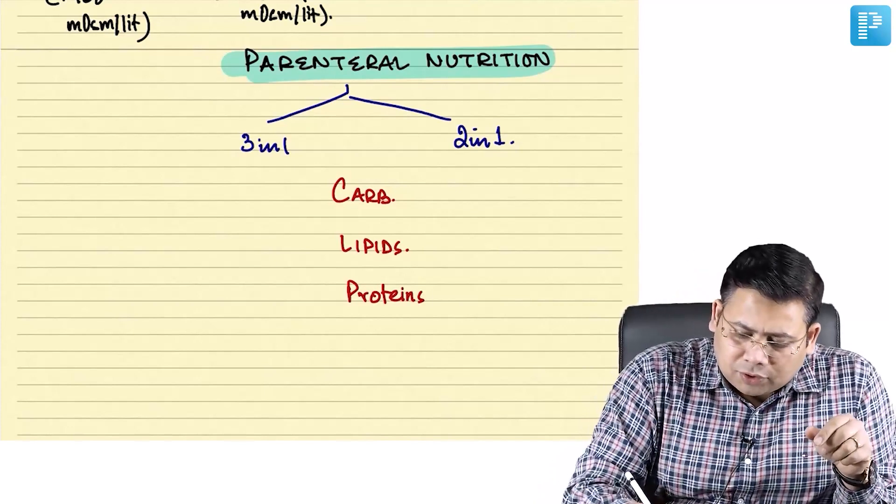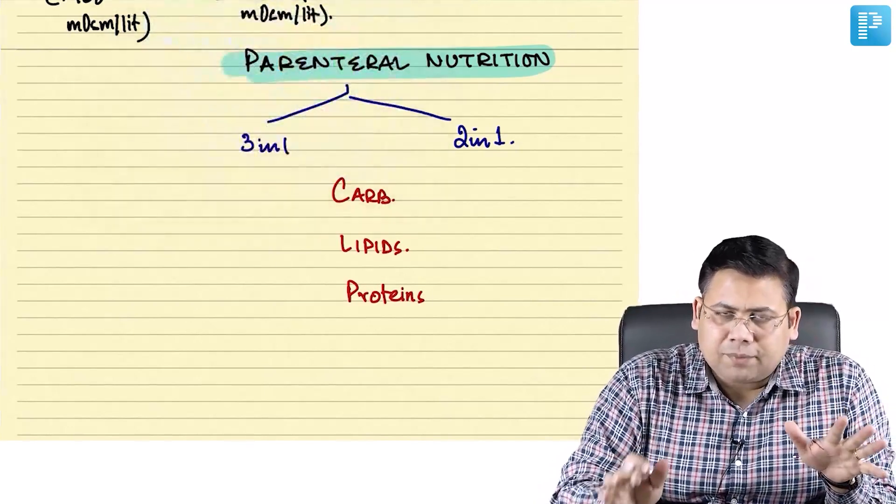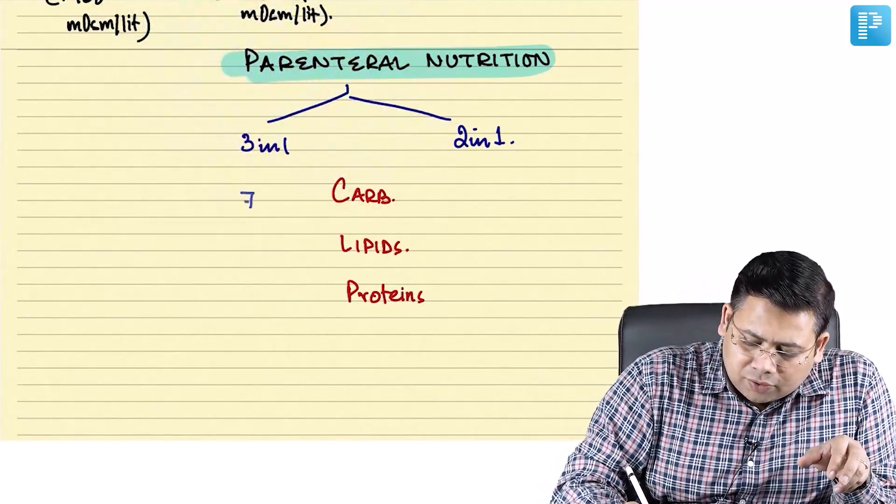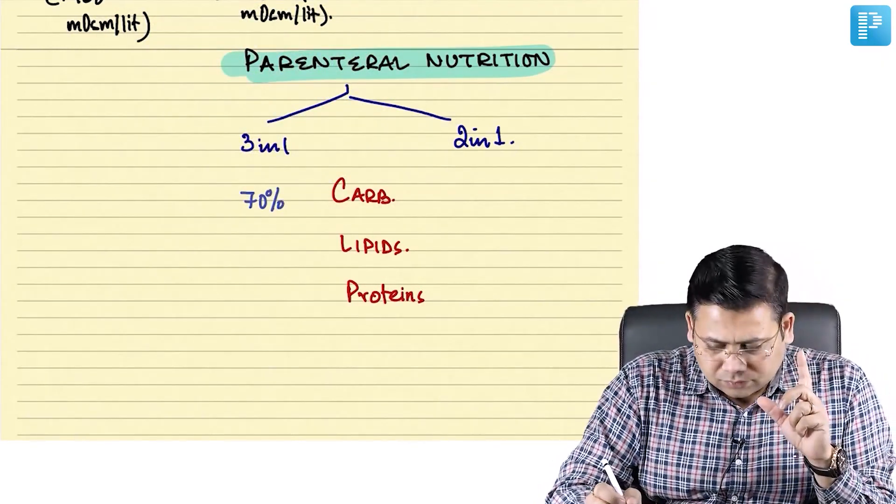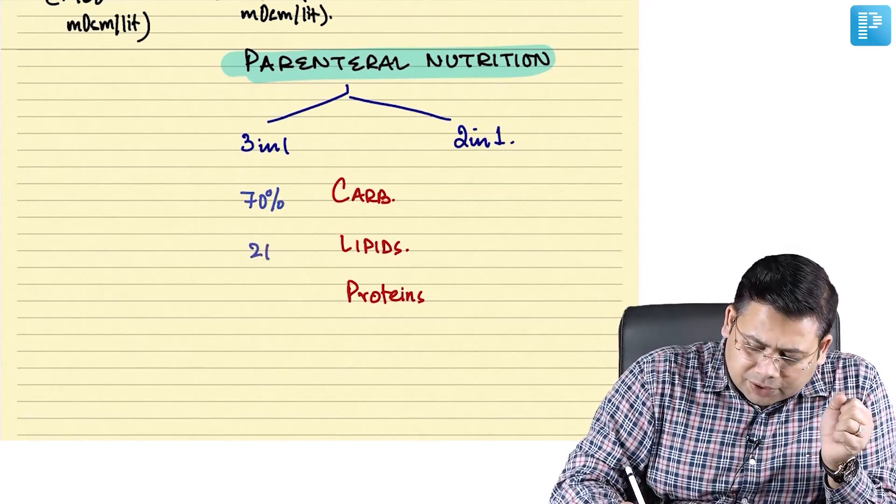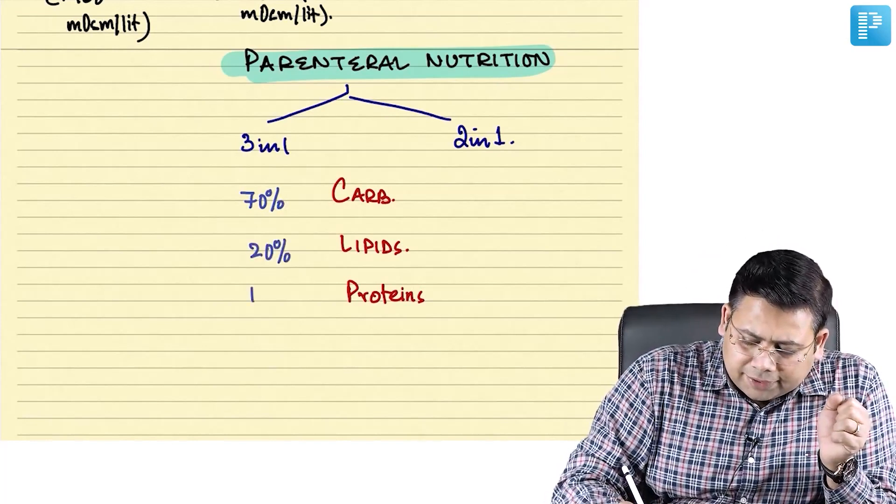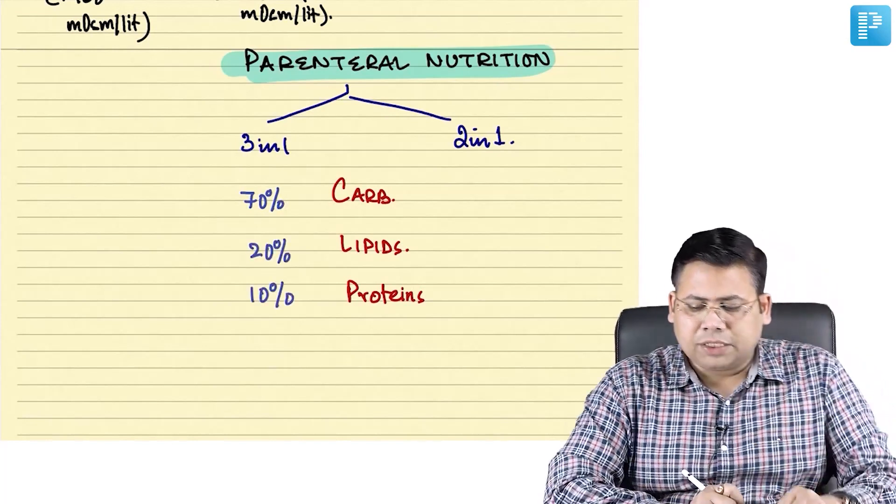If we talk about three in one, all three of them are present and the ratio is 70% of the volume is carb, 20% of the volume is lipid, and 10% of the volume is proteins.